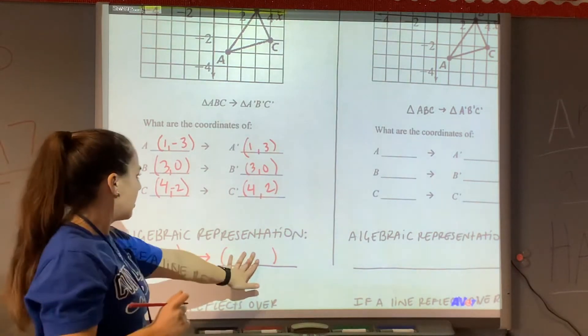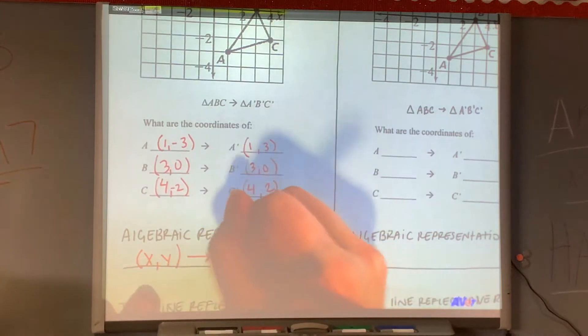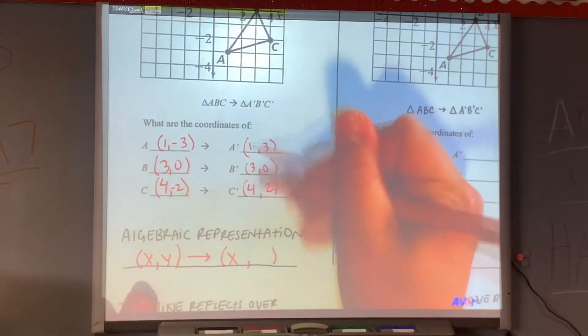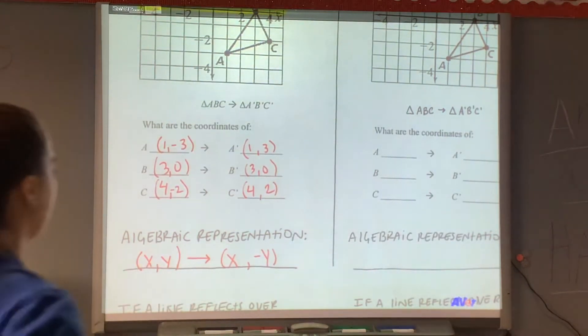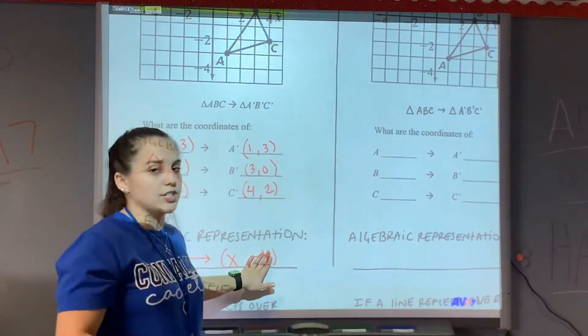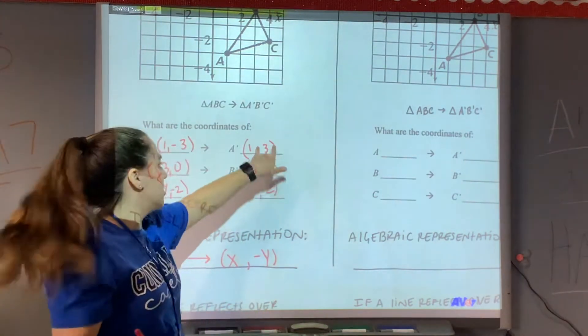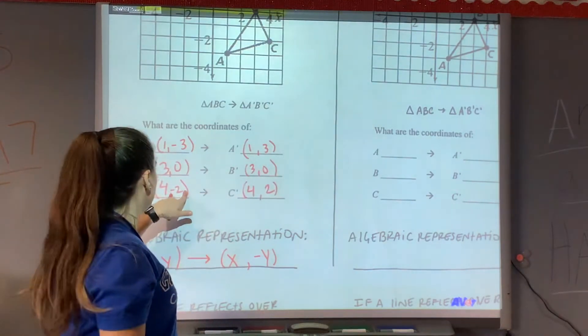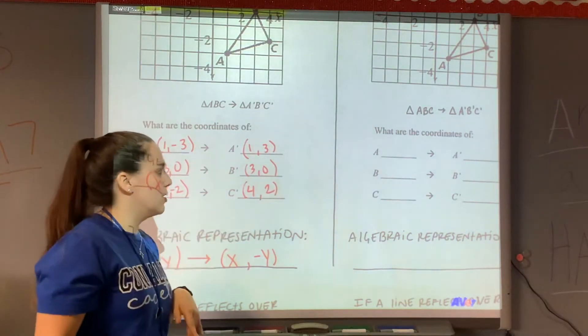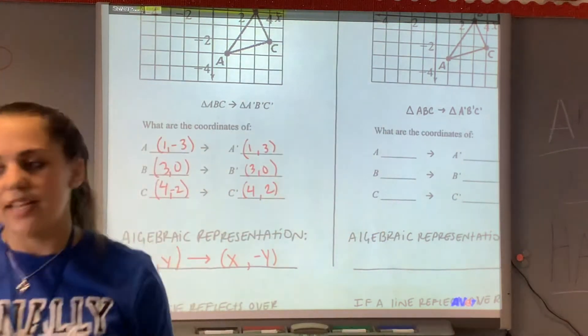So here for my rule, I'm going to write it this way. I'm going to say X stays the same because they did. And I'm going to say Y is negative Y. Basically saying it's the opposite version of whatever you have. So right now we have negative 3. Well, the opposite of that is positive 3. Right now we have 0. Opposite is still 0. Negative 2. Opposite is 2. Alright, so let's look at another example over here and let's see how it's different.